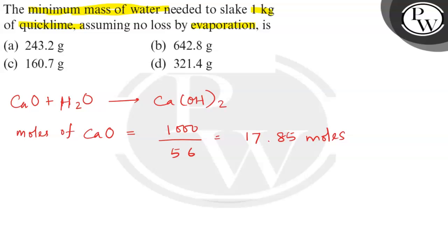1 mole of CaO will be equal to 1 mole of H2O. 1 mole CaO is equal to 1 mole H2O.